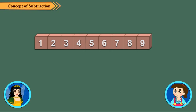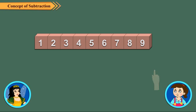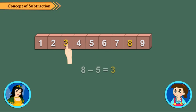Now look at the number strip here. To subtract a number from a given number, we should move towards left on the number strip. So when we subtract five from eight, we put a finger on eight and then move five steps back to reach three.